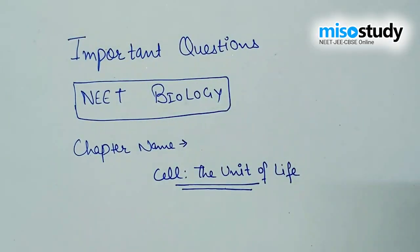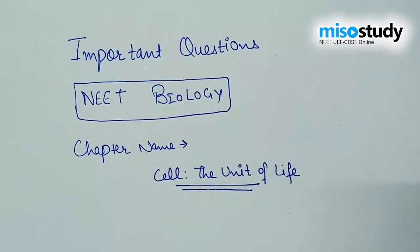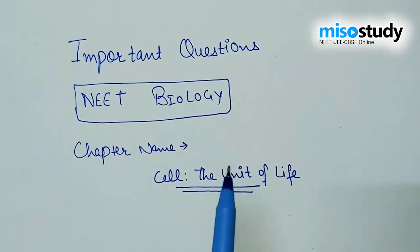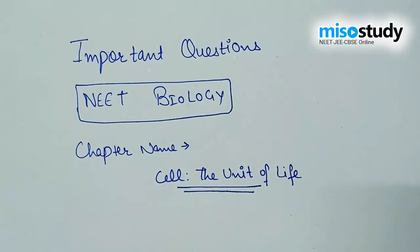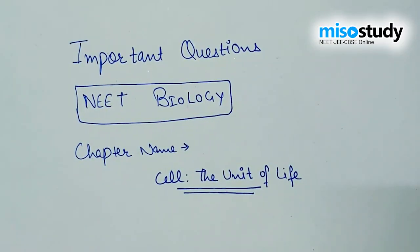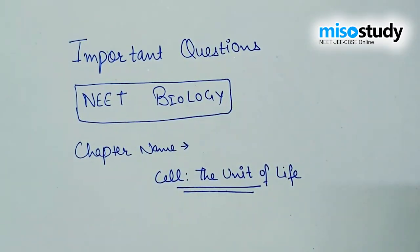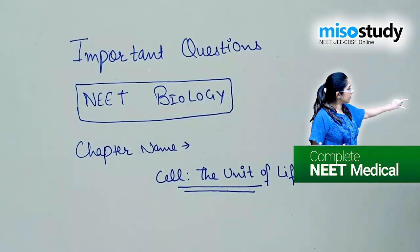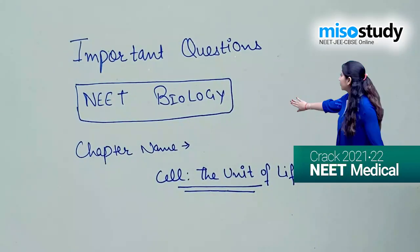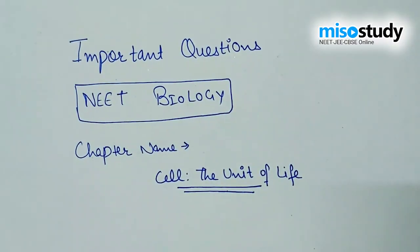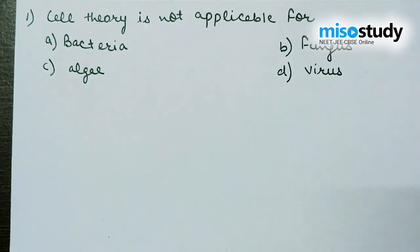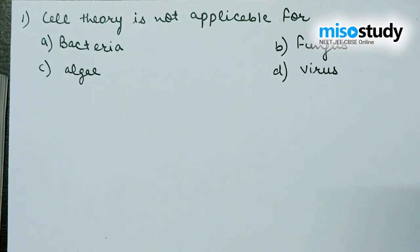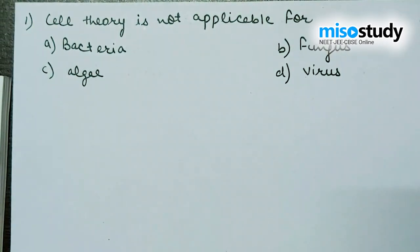Hello everyone, I am from Meso Study and in this session we are again discussing some important questions from NEET Biology. In this session we are going to discuss the chapter 'Cell: The Unit of Life' from the 11th section. Let's start the session and discuss the questions one by one. The first question from cell the unit of life is: cell theory is not applicable for — options are bacteria, fungus, algae, and virus.